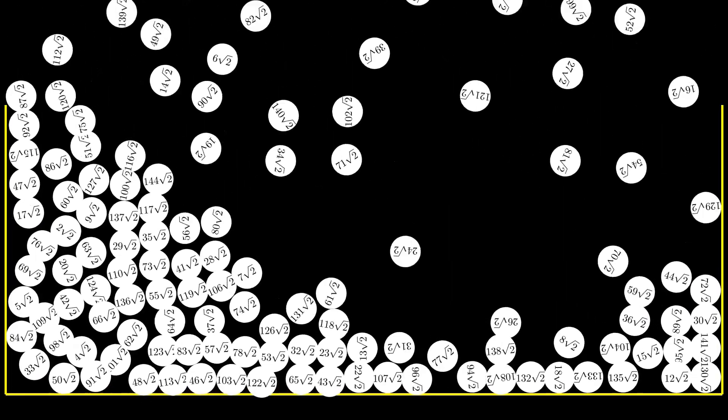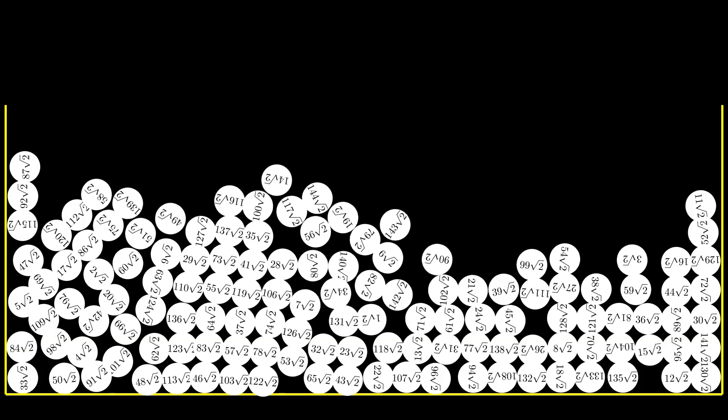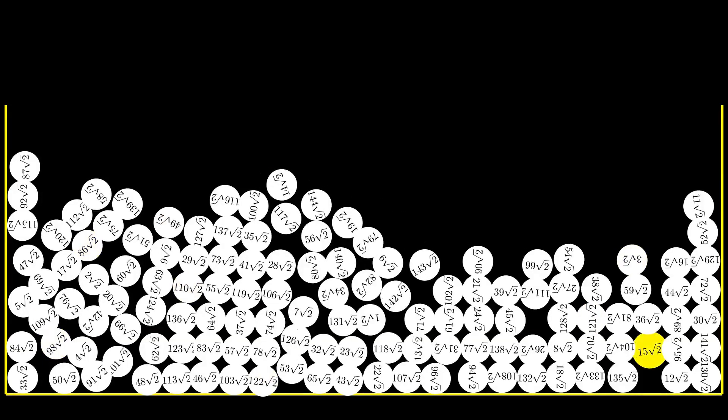Now imagine that you have a box of balls, each of which has an integer multiplied by the root of 2 written on it. You can equally likely take a ball out of the box and count the fractional part of the number on it. What is the mathematical expectation of the value you have received?